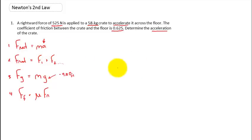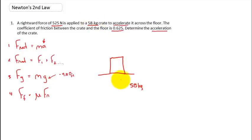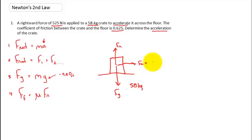Let's start with a free body diagram, shown as a square representing the crate. We have a 58-kilogram crate with the force of gravity pulling downward, a normal force going upward equal and opposite to gravity, a rightward applied force F-A equal to 525 Newtons, and a leftward force of friction — we don't know that value yet. The coefficient of friction, 0.625, is noted at the base of the crate between the surfaces.